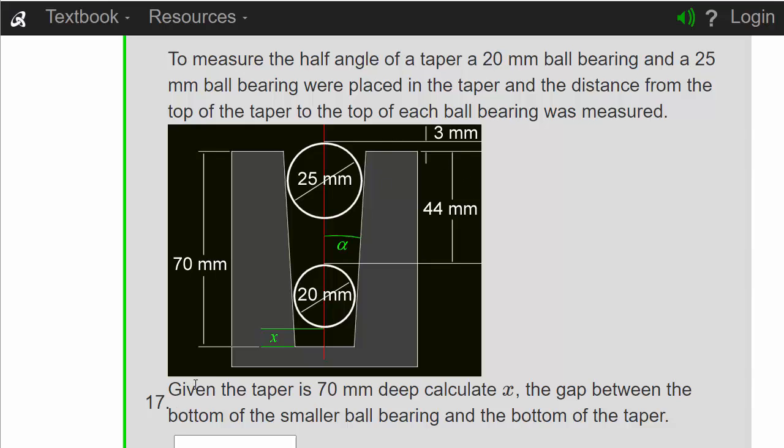Question 17: Given that the taper is 70 millimeters deep, calculate X, the gap between the bottom of the smaller ball bearing and the bottom of the taper. The reason you'd want to know that is because if the ball bearing was sitting on the bottom, then this way of measuring the taper wouldn't work, so you need to have a positive gap there.